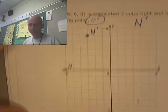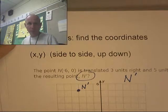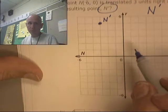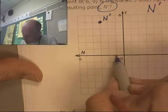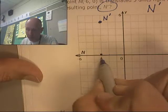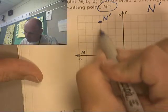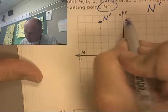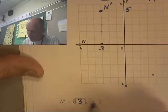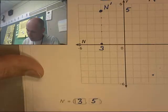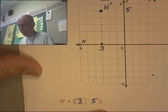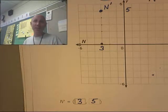The question doesn't just want me to move the point — it wants me to state the coordinates of N prime. X is the side-to-side and Y is the up-down. This point is one, two, three — that's my X — and one, two, three, four, five — that's my Y. So N prime is located at three comma five.